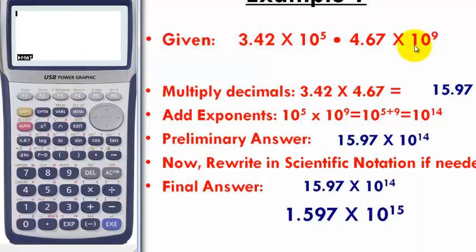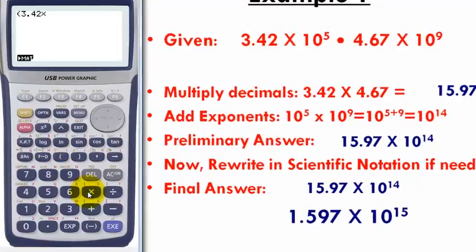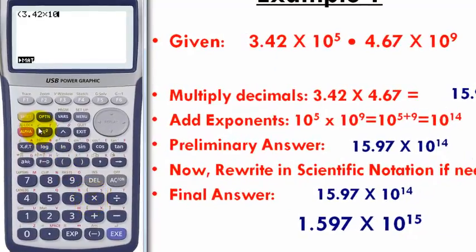What is important here is you have to include your parentheses when you are typing your scientific notation. So to type this one in, I'll press open paren 3.42 times 10 raise to 5 close paren times open paren 4.67 times 10 raise to 9 close parenthesis.